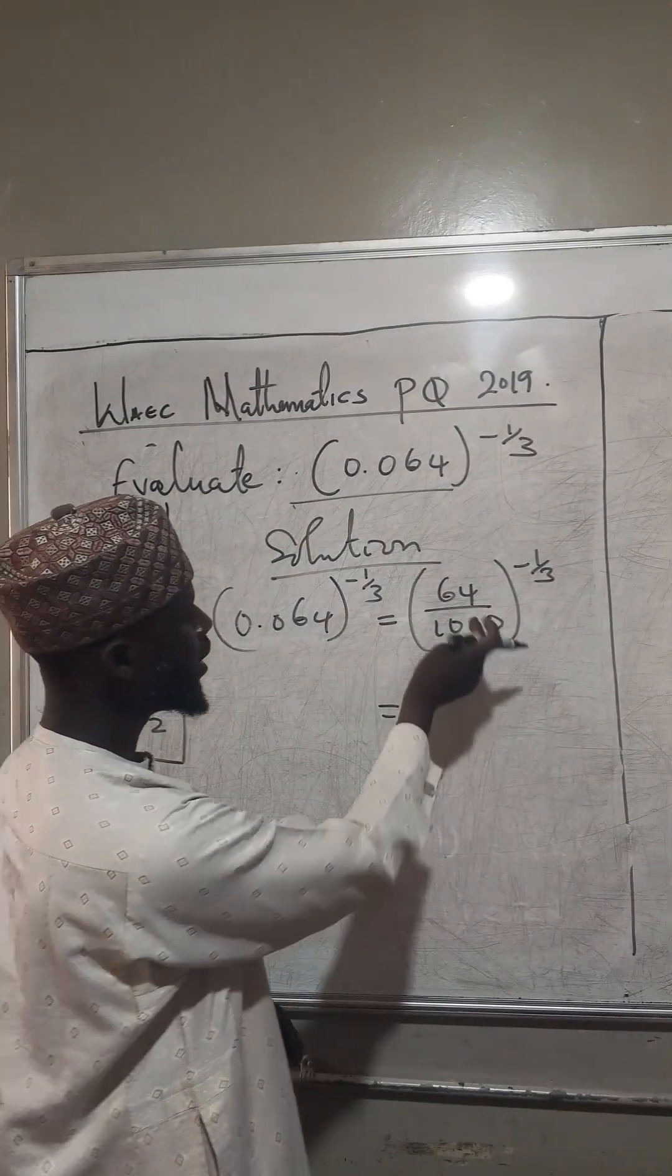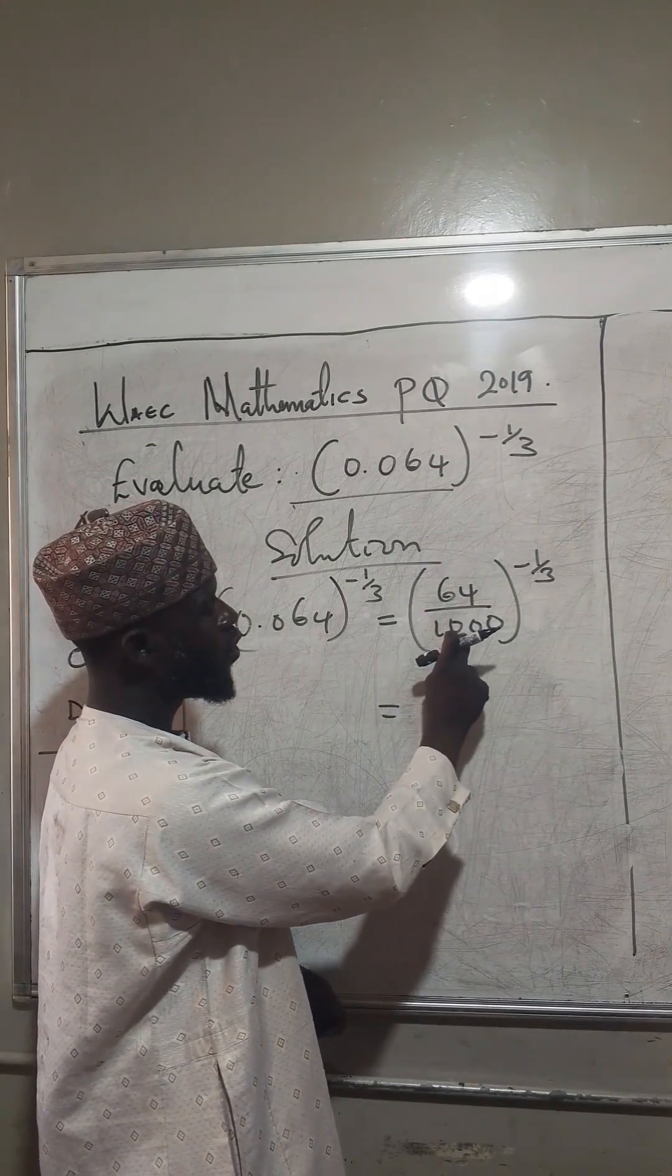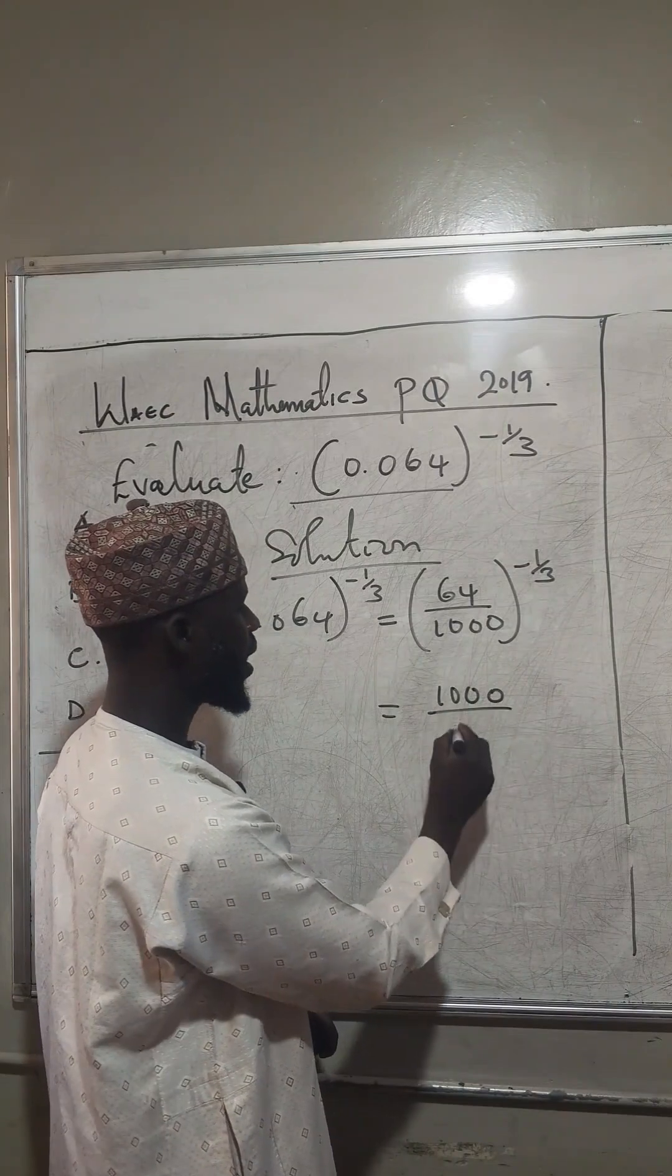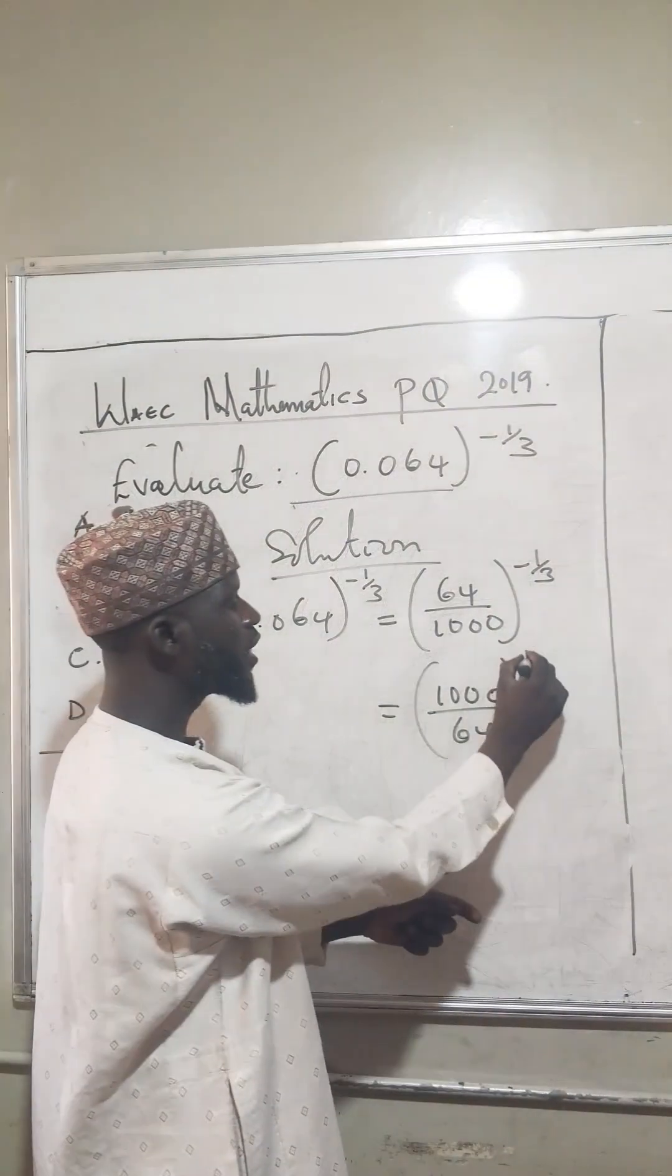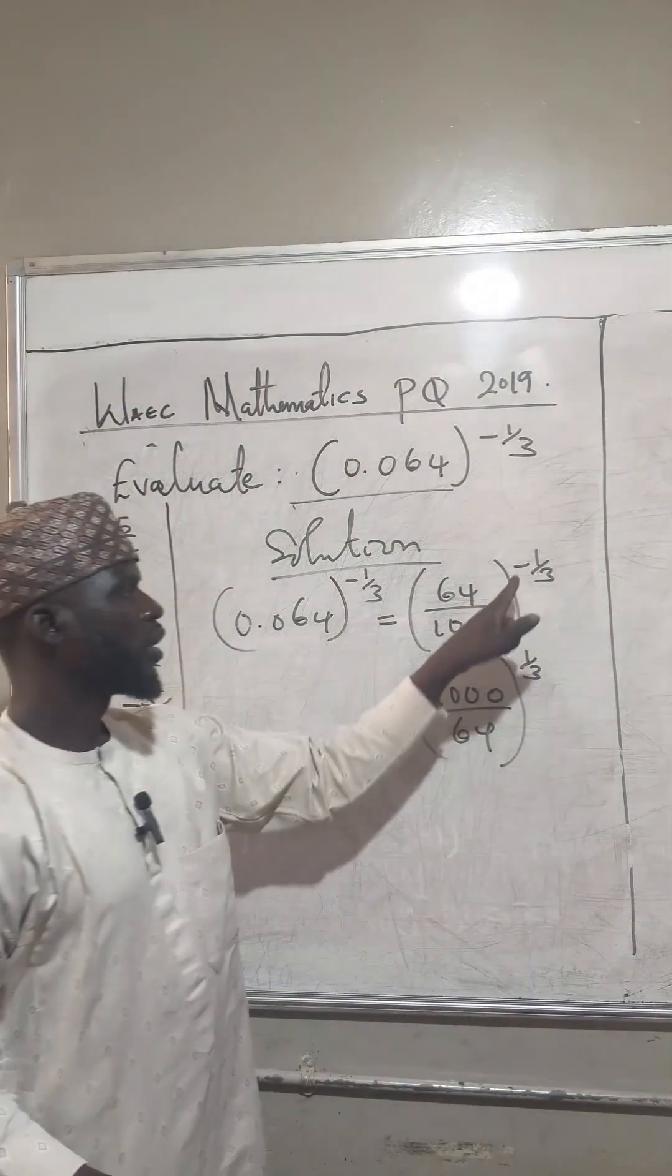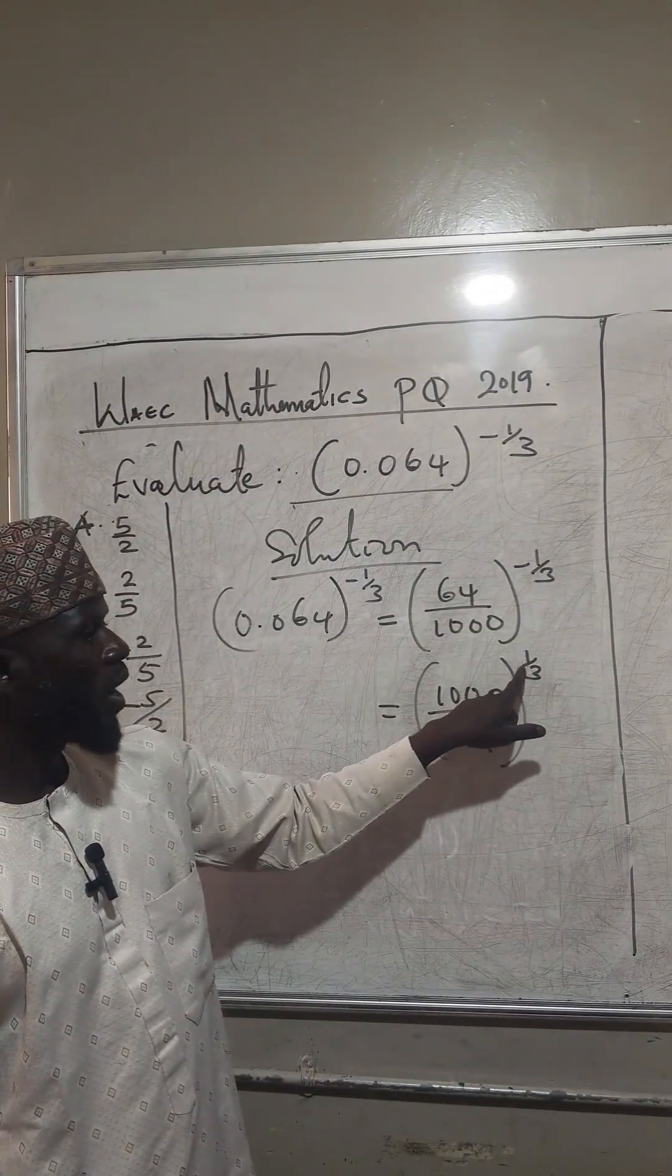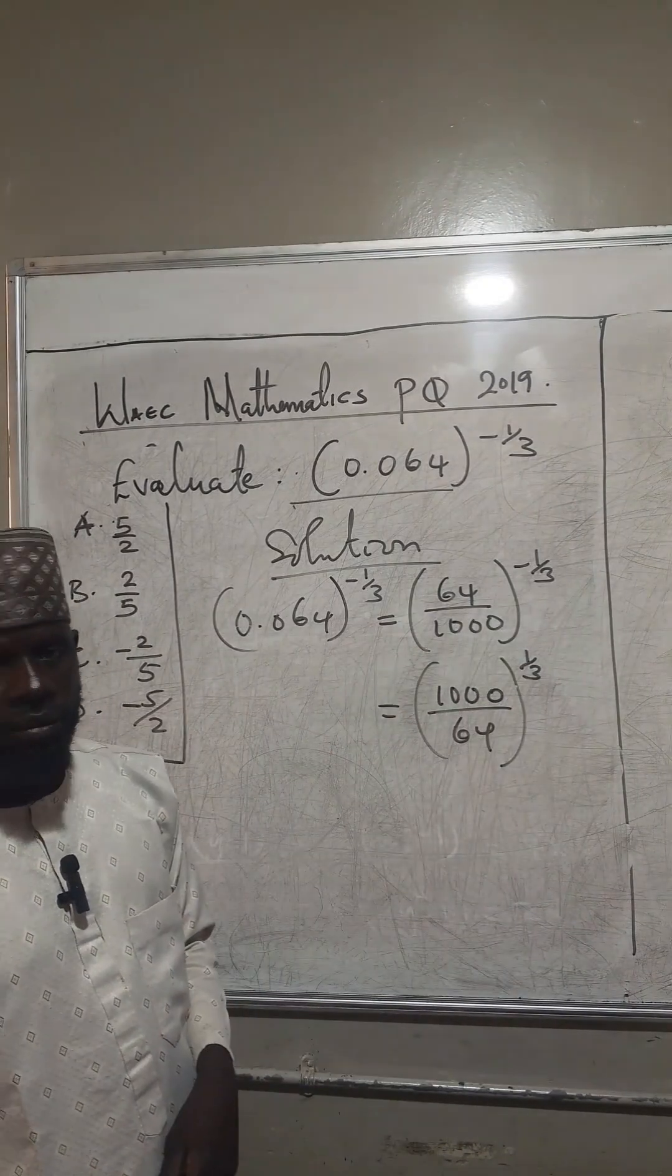And the reciprocal is, the reciprocal of 64 over 1,000 is 1,000 over 64. Now raised to positive power. Note that, because of the reciprocal, that is why we have the minus here removed, and now we have positive power.